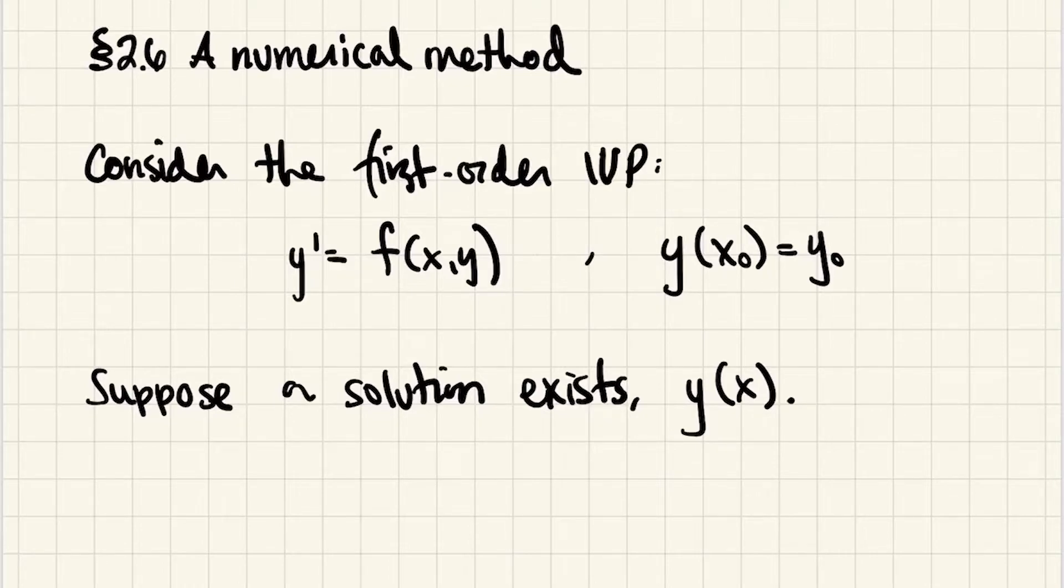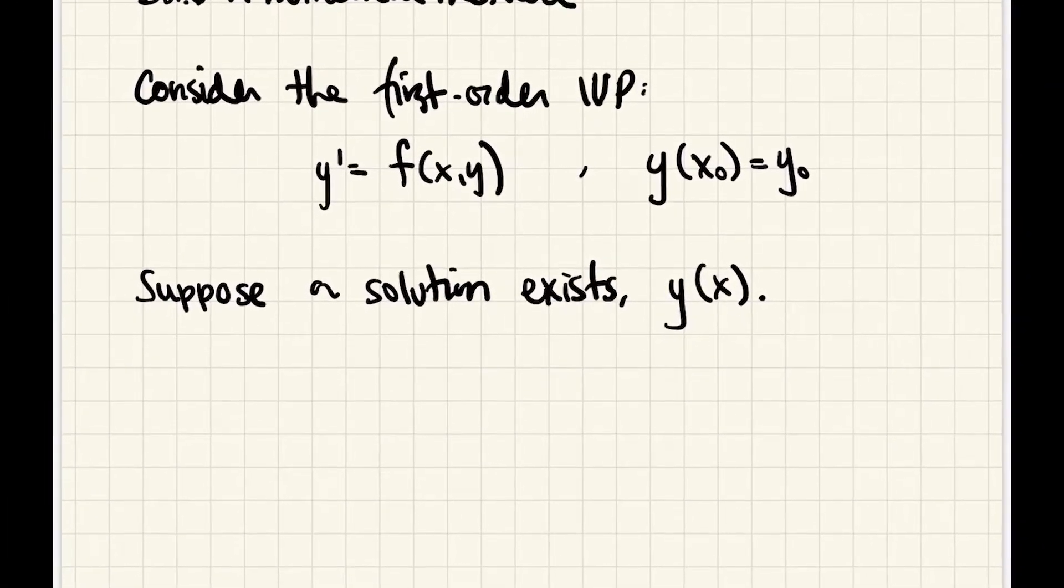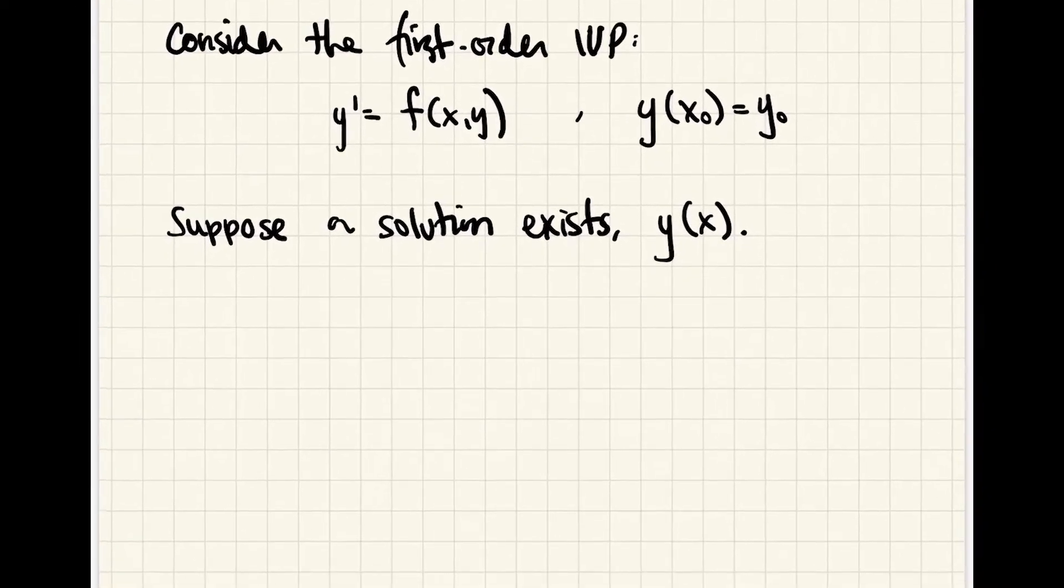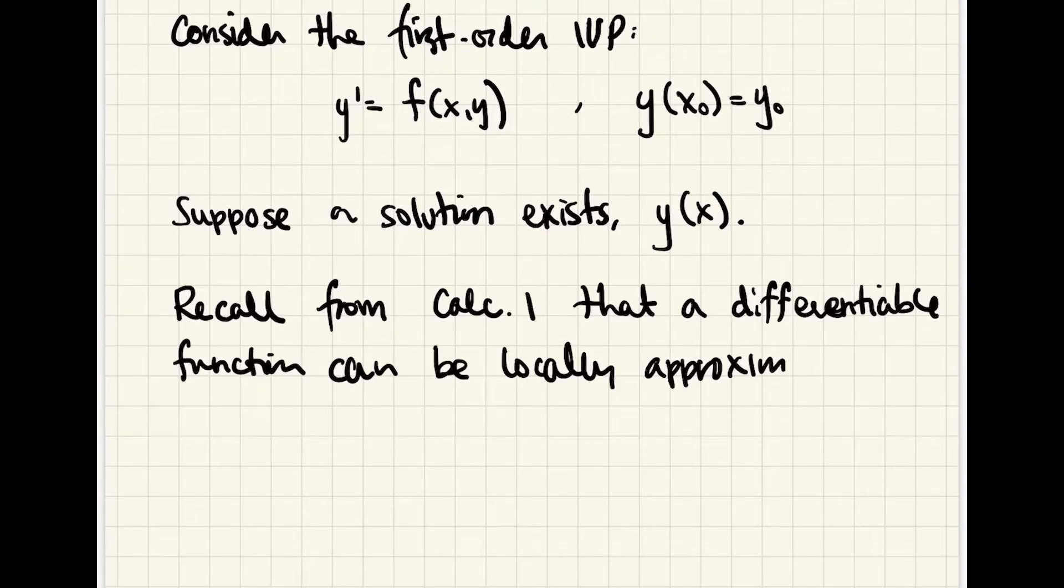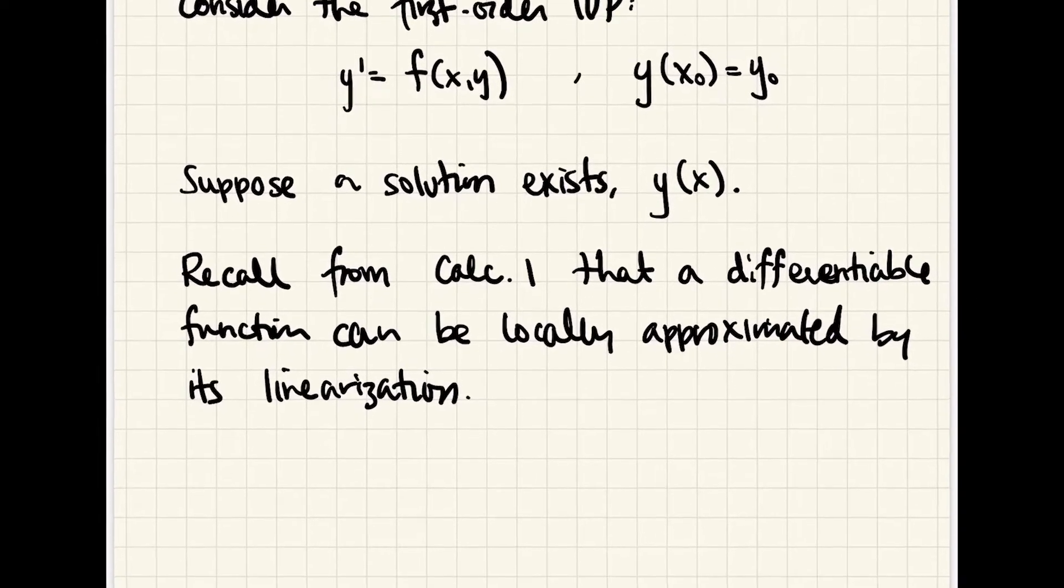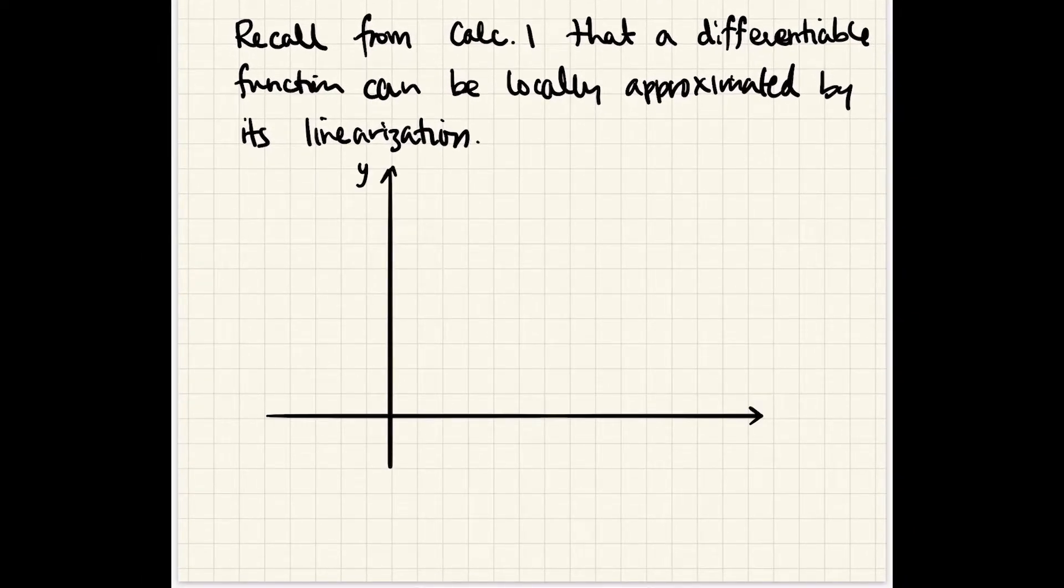Now we know many analytical methods for determining y(x) in the aforementioned categories, but what we're going to look at here is a numerical method for estimating the function y(x). Now you may recall from calc 1 that a differentiable function can be locally approximated by something called a linearization. So that is by the tangent line through the point that we're interested in. Suppose you have a function, let's call this y(x), and we have a particular point here which we're going to call (x₀, y₀).